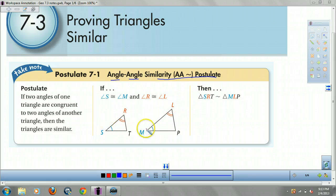So, S congruent to M, R to L, SRT to MLP. You only need two angles, because if you have two, you know the third.